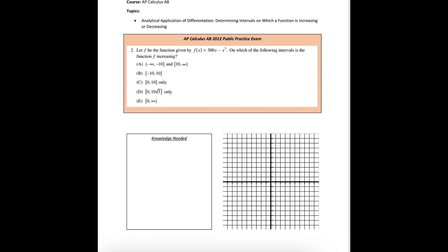Now the topic that this covers is analytical application of differentiation, determining intervals on which a function is increasing or decreasing. So let's read the problem here. It says let f be the function given by f of x equals 300x minus x cubed. On which of the following intervals is the function f increasing? As we can see it's a multiple choice problem where we need to choose the interval or intervals on which this function is increasing.